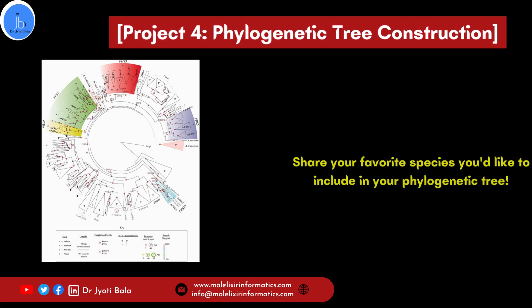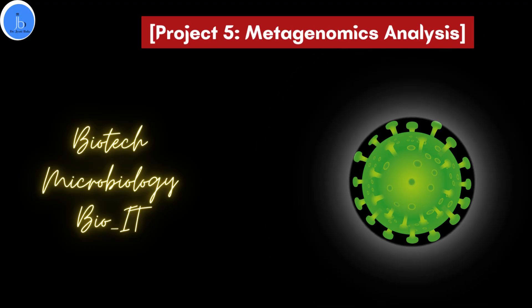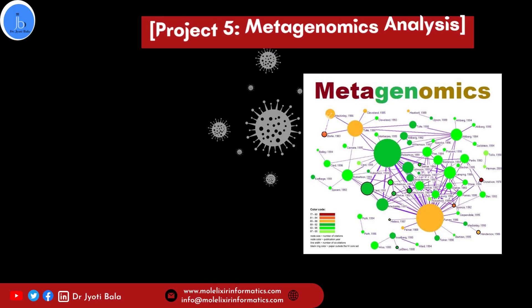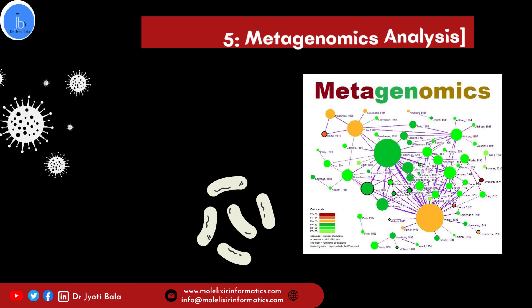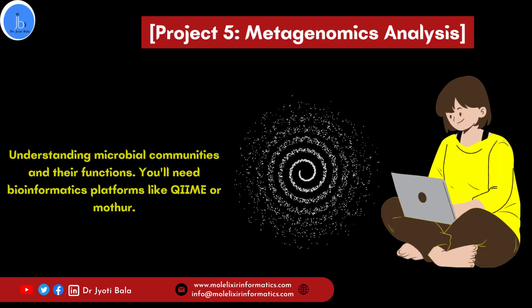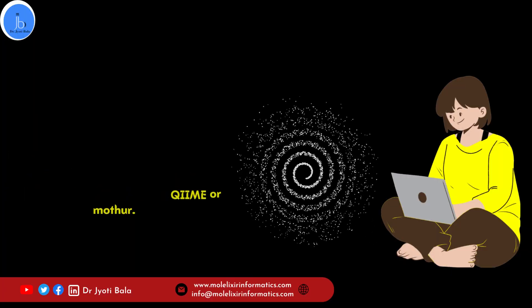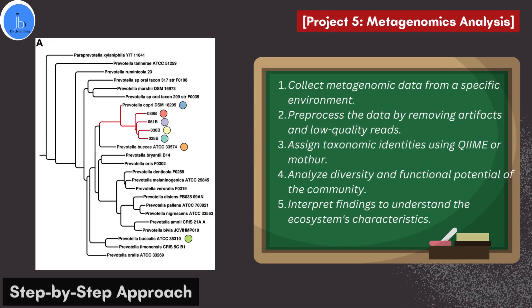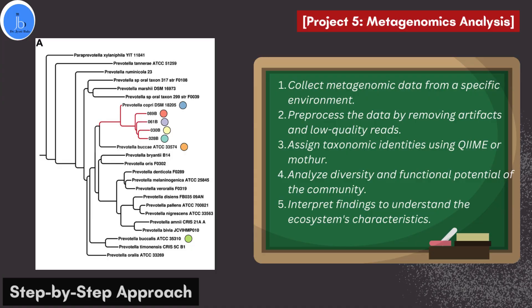The fifth project is metagenomics analysis. If you are from biotechnology, bioinformatics, or even microbiology, you can run such projects. Here you can explore metagenomic analysis, studying genetic material from environmental samples. This has applications in understanding microbial communities and their functions. You will need a bioinformatics platform like Mothur. Collect metagenomic data from a specific environment, pre-process the data by removing artifacts and low-quality reads, assign taxonomic identifiers using Mothur, analyze the diversity and functional potential of the community, and interpret the findings to understand the ecosystem's characteristics.